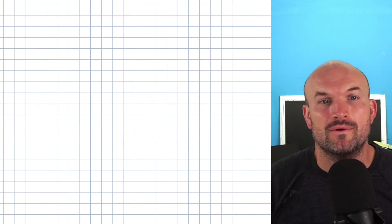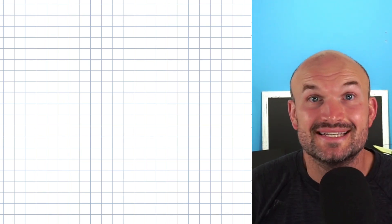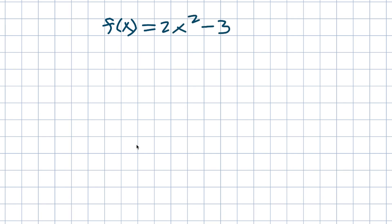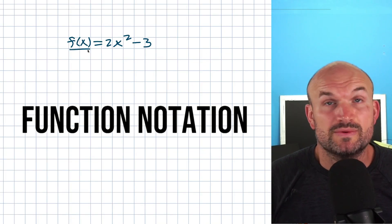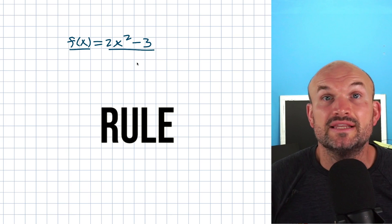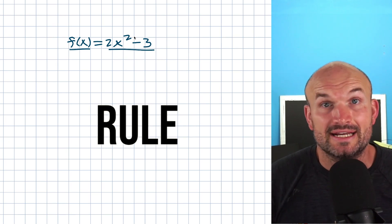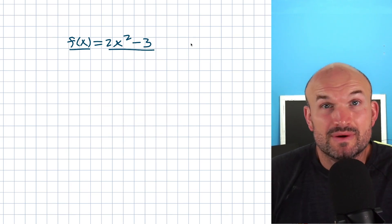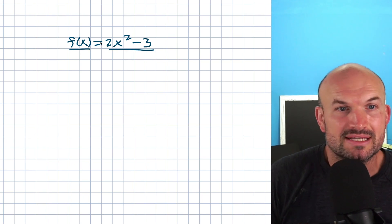There are a couple of things you just have to know about functions. Take this as an example: this is going to be your function notation, which we say is f of x, and this is going to be the rule, which in this case just looks like an expression. We can always write functions in terms of x's and y's, and a lot of times we write this in the same respect.